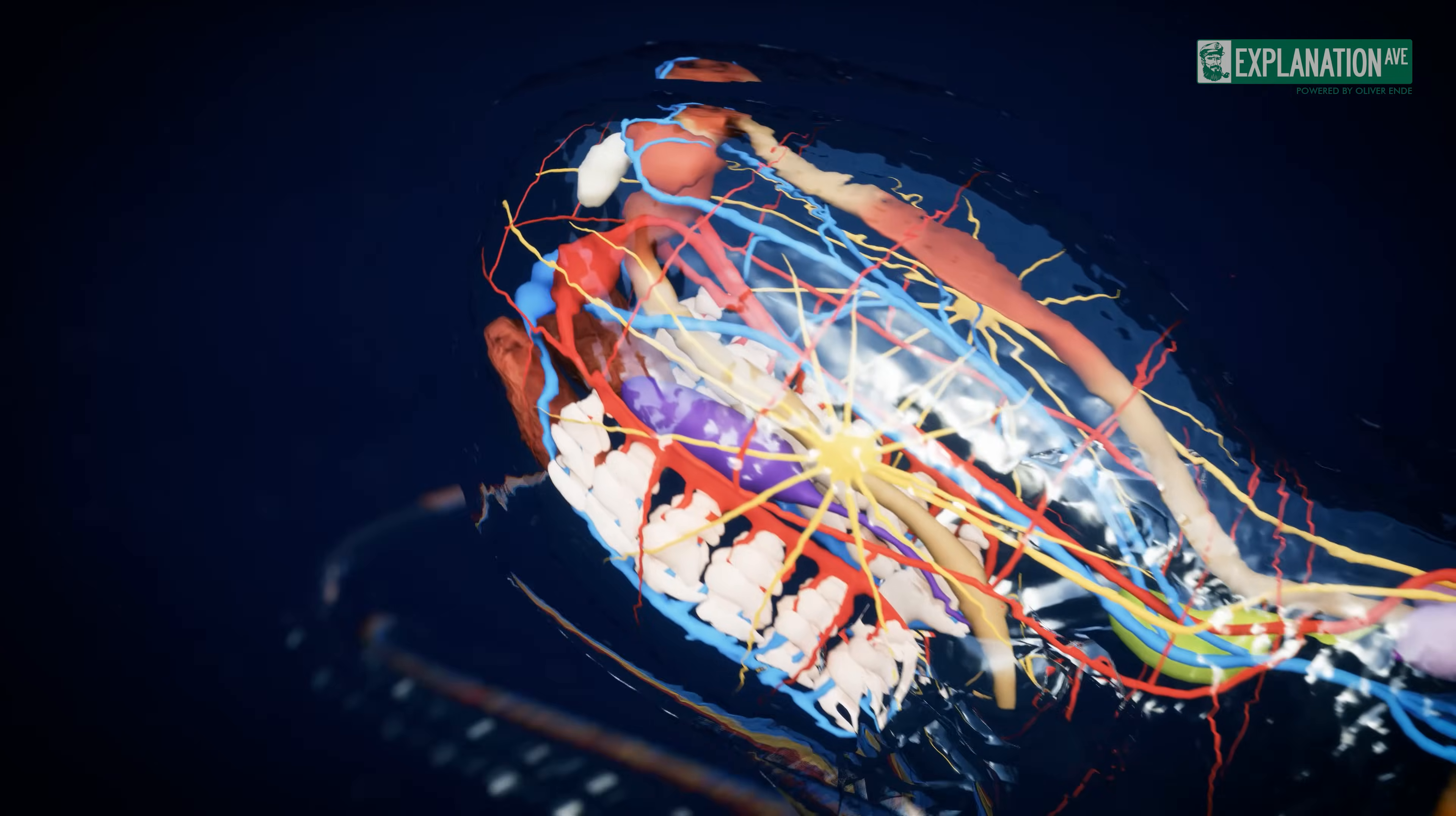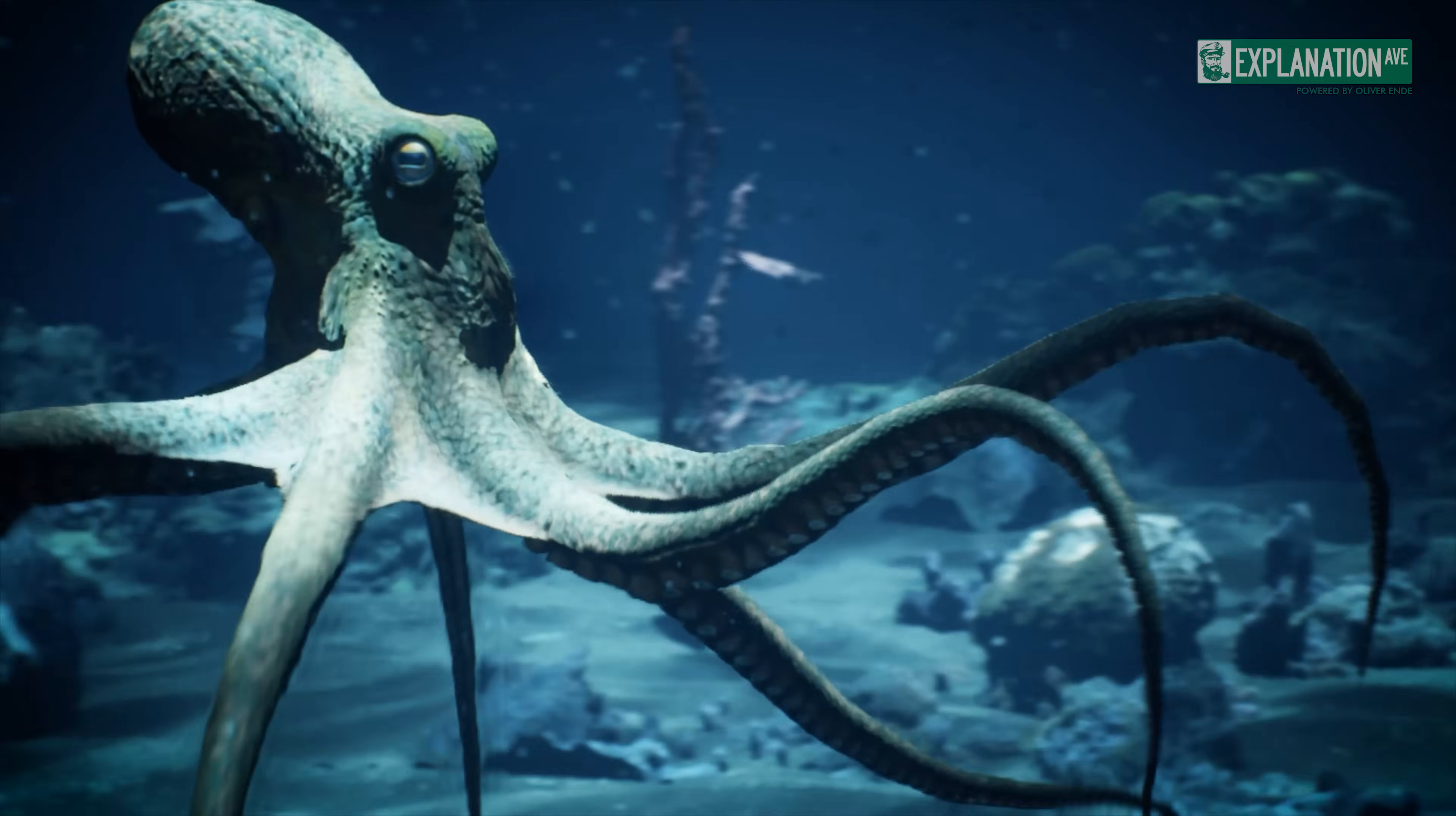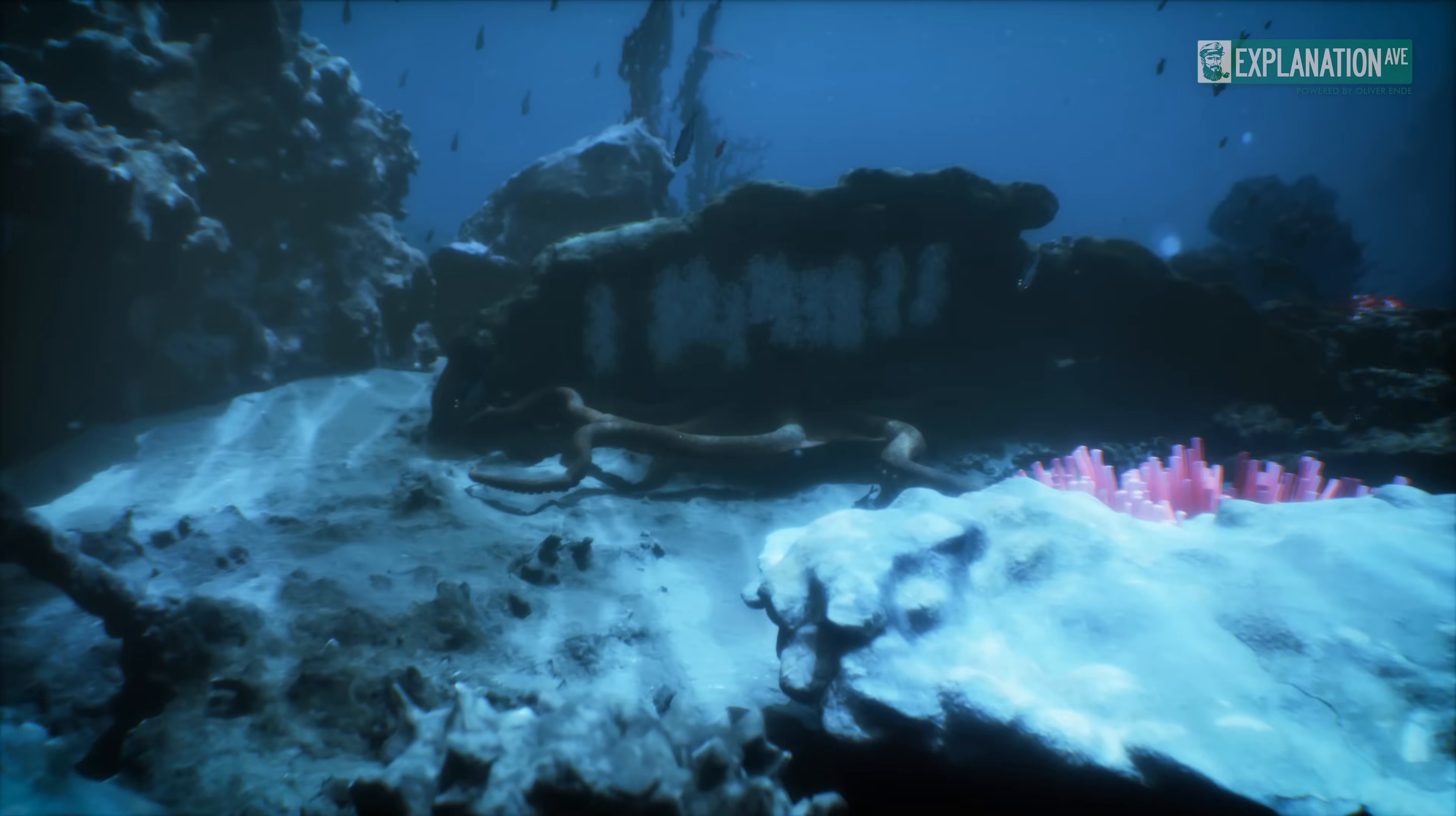The gonad or genital gland produces sperm or eggs depending on the sex of the animal. Males have specialized arms, called hectocotylus, which are used to insert their spermatophores into the females. The females, on the other hand, carry the eggs in their mantle cavities and guard them until the larvae hatch.